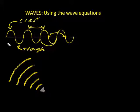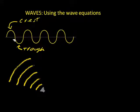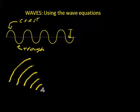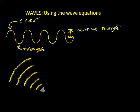Now we can also talk about something called the wave amplitude. Amplitude is a very important concept. For a transverse wave, the amplitude equates to the wave height — the distance above this midpoint line. That wave height is referred to as amplitude.